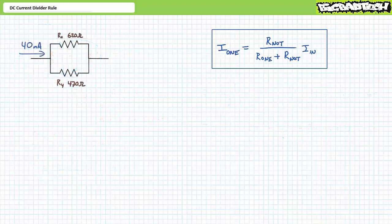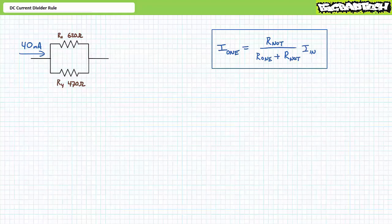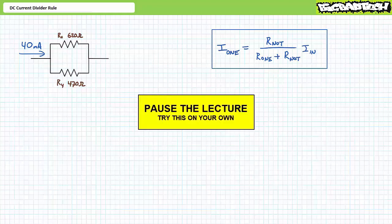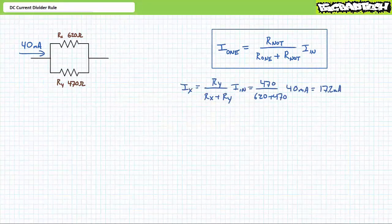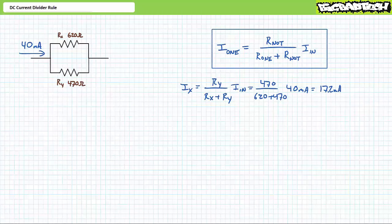Put your understanding of the DC Current Divider Rule to the test with this example. Given a parallel relationship of RX, a 620 ohm resistor, and RY, a 470 ohm resistor, known to experience 40 milliamps of incoming current, use the current divider rule to solve for the current through each resistor. The DC Current Divider Rule set up to solve for IX equals RY divided by RX plus RY, times IN — in this case 40 milliamps. Substituting our given values yields IX to be 17.2 milliamps.